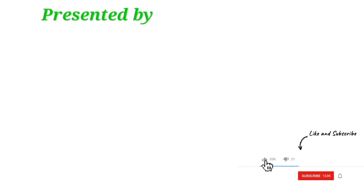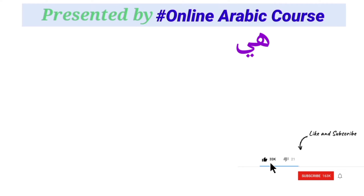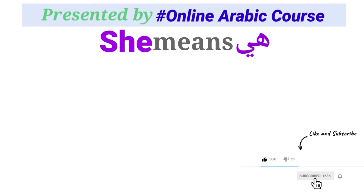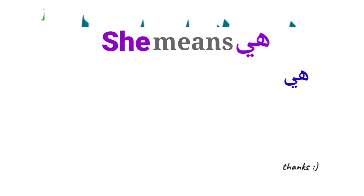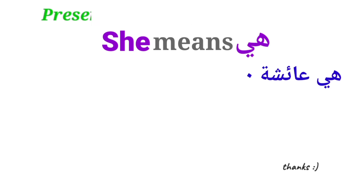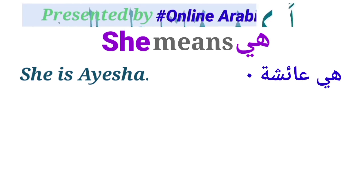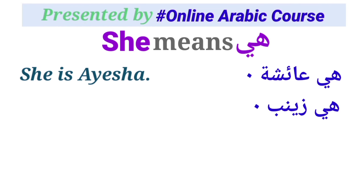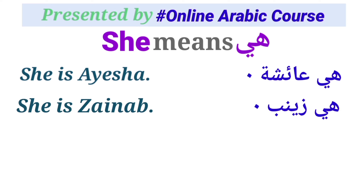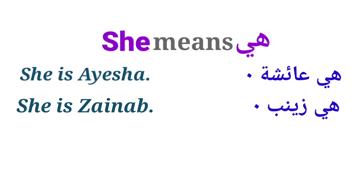Now we will talk about the next personal pronoun: هي (hiya). هي means 'she'. It is used for feminine gender. For example: هي عائشة — she is Ayesha. هي زينب — she is Zainab. It is also used with verbs.